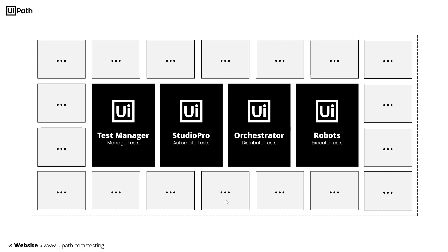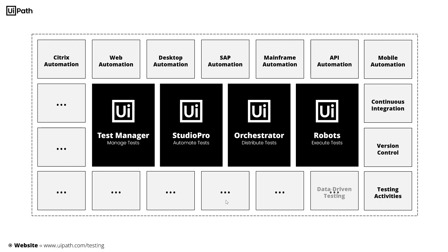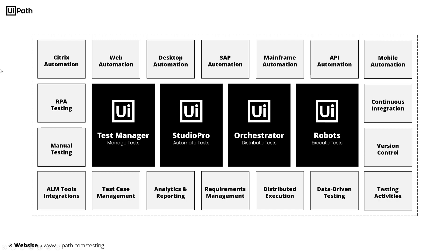And number four, we have our little but very powerful helpers, the so-called robots, that help you to execute automated test cases on multiple machines in parallel. And these four product components as part of the UiPath test suite provide a variety of different testing capabilities to you, ranging from automation capabilities such as Citrix automation, web, desktop, SAP, mainframe, to API and even mobile automation.